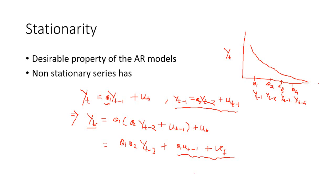If this property is violated — if the coefficients do not converge — it creates a problem for the AR model, because the time series will never converge and we will never be able to estimate theta1, theta2 properly. These estimates will be biased. To estimate theta1, theta2, through thetaP correctly, it is important that the AR time series is stationary. This is a very strict criterion for the AR model. Before doing forecasting using the AR model, we must ensure the time series is stationary. If it is not stationary, we make it stationary and then use the AR model. In a separate video I will talk about how to convert a non-stationary series into a stationary one.